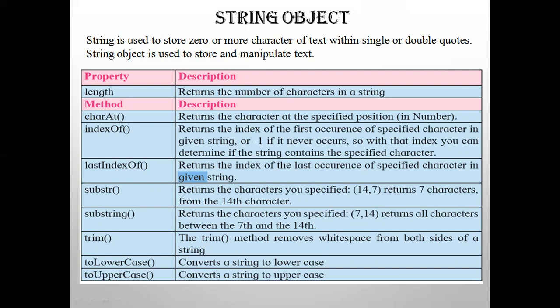The string object is used to represent and manipulate a sequence of characters. It is a global object used to store strings. The string object stores zero or more characters of text within single or double quotes, and it is used to store and manipulate text.